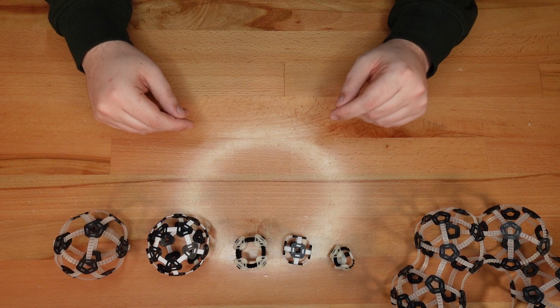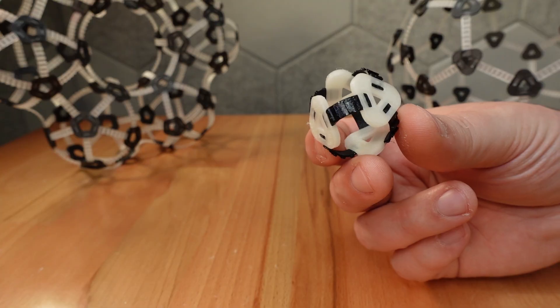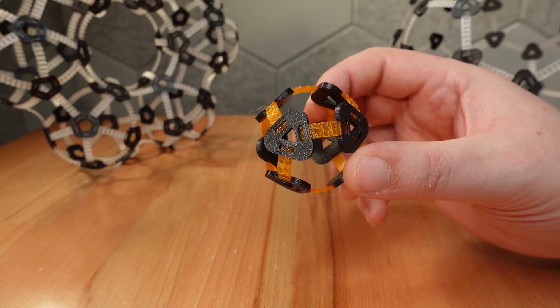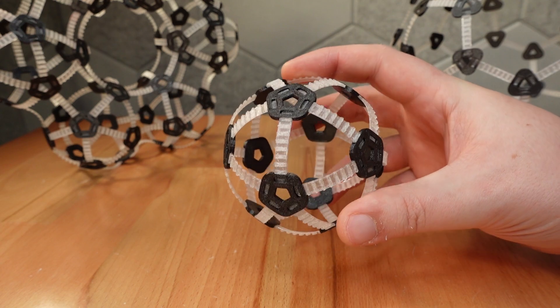Nodes are really good at creating shapes based on platonic solids. Here's a tetrahedron, an octahedron, a cube, a dodecahedron, and an icosahedron.